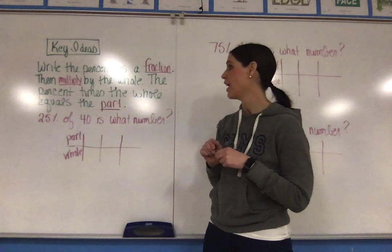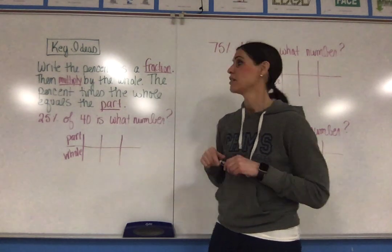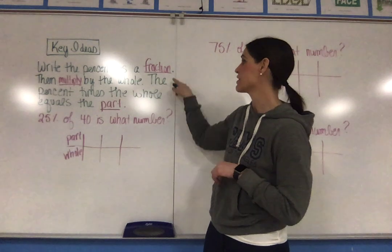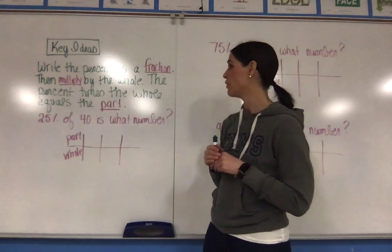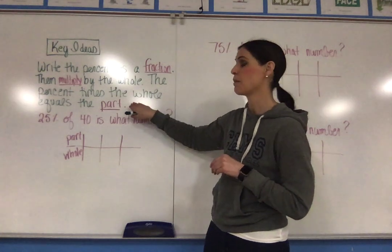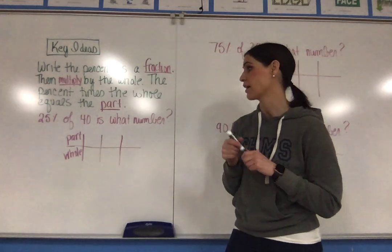The percent times the whole equals the part. So again, you'll write the percent as a fraction, then multiply by the whole. The percent times the whole equals the part. So that's one method, and then we're also going to talk about a second method.